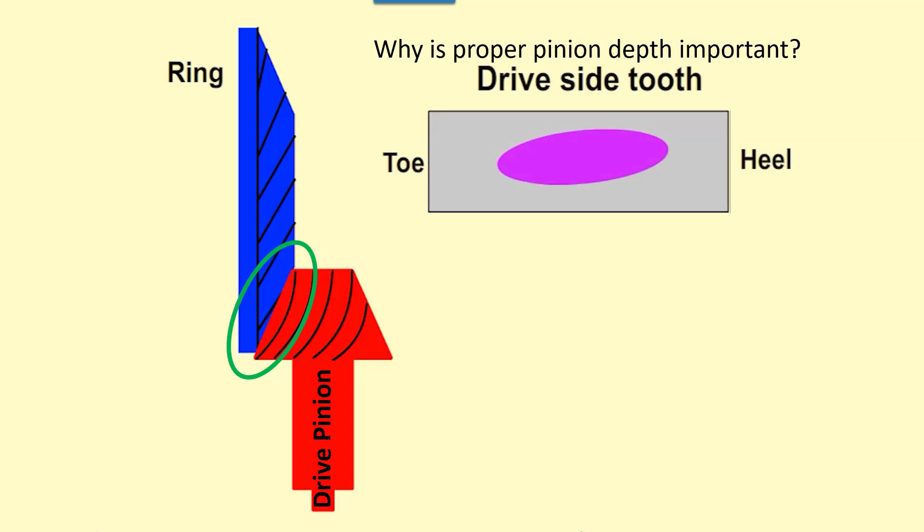Where the gears touch each other is called the contact patch. The goal of proper pinion depth is to ensure that the contact patch on the ring gear is centered.